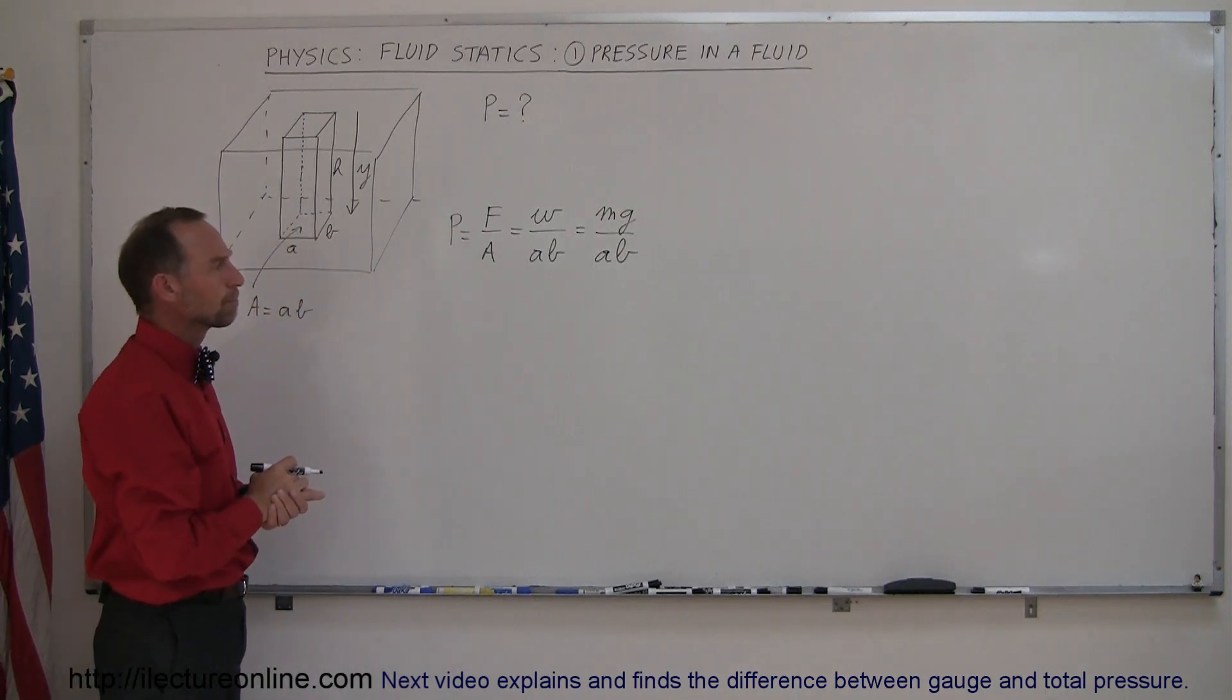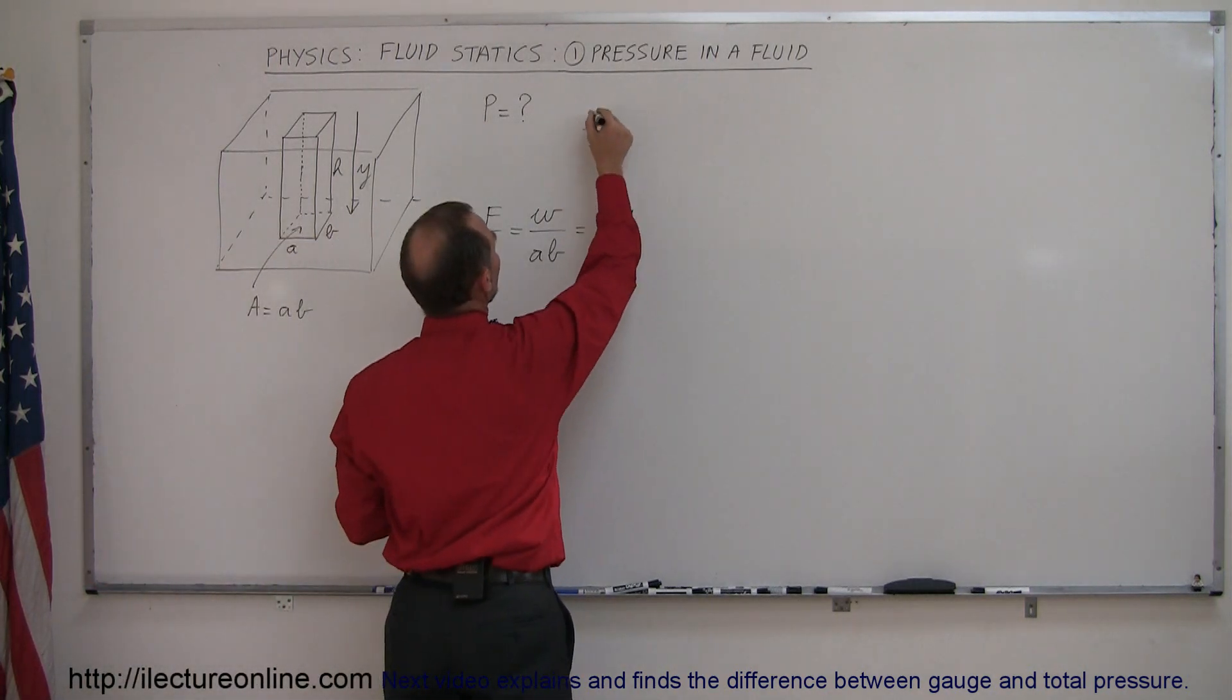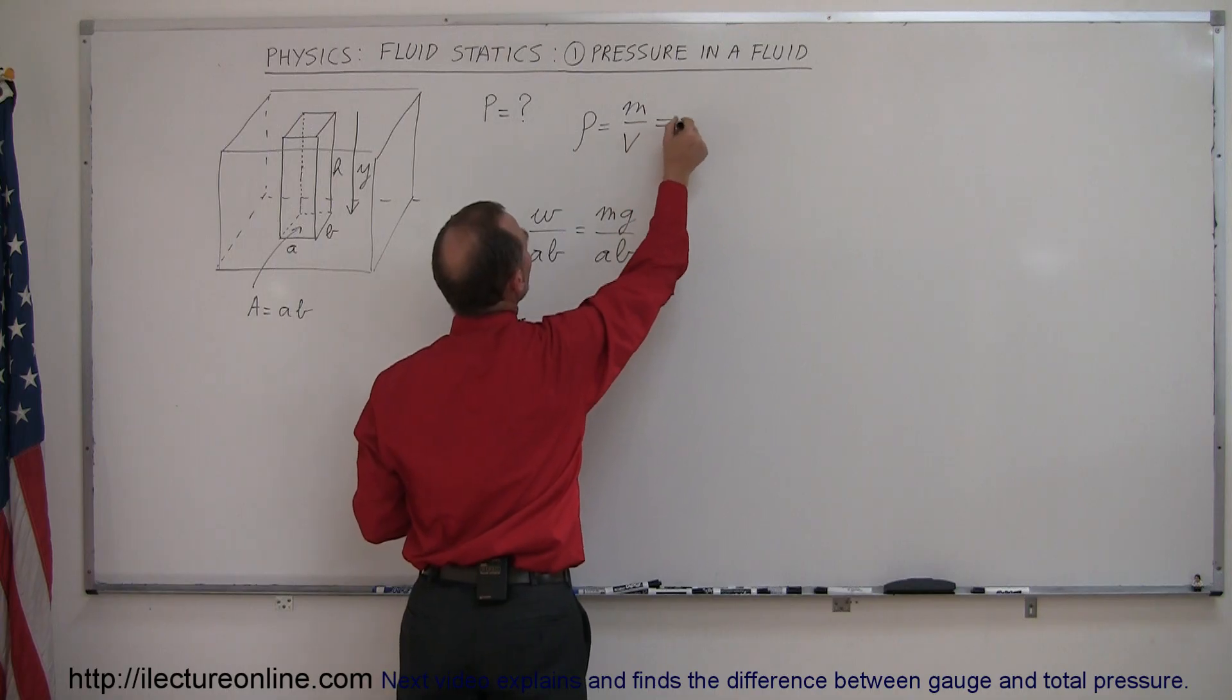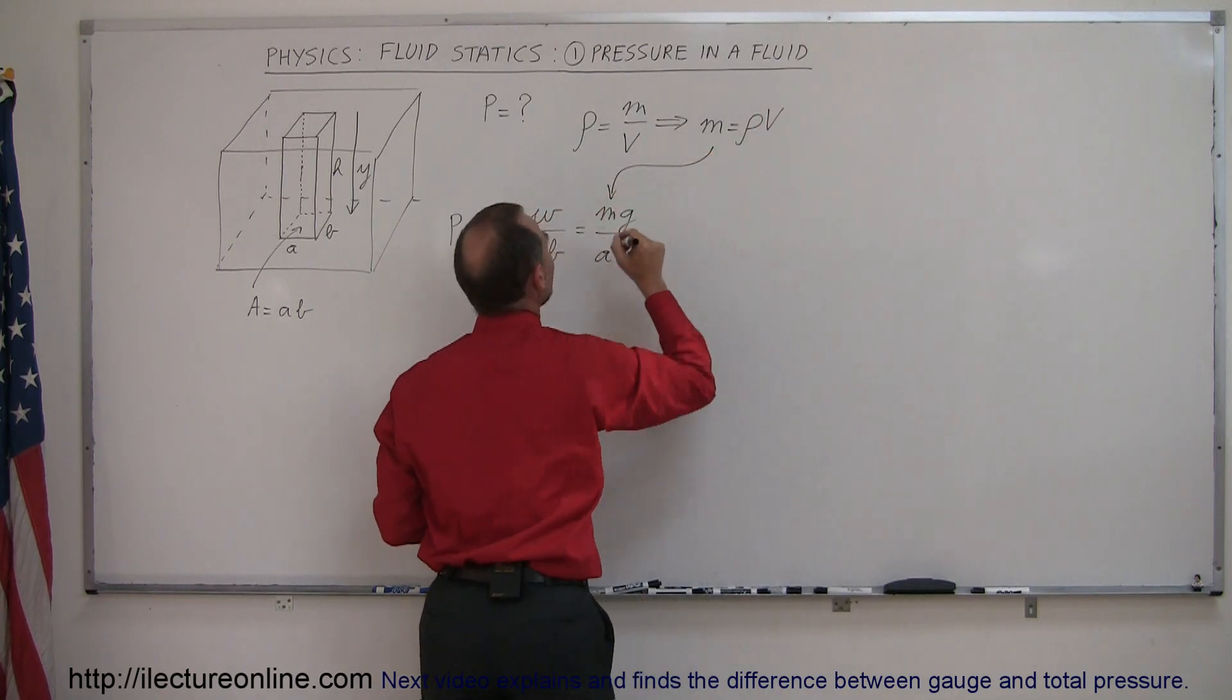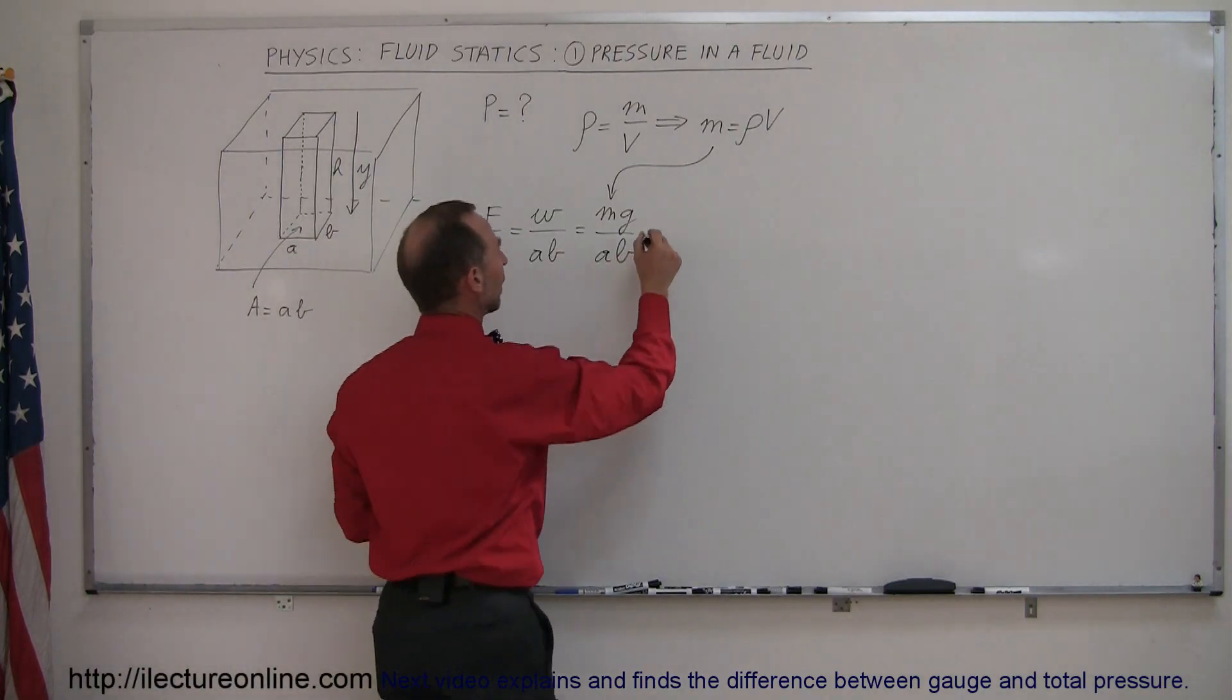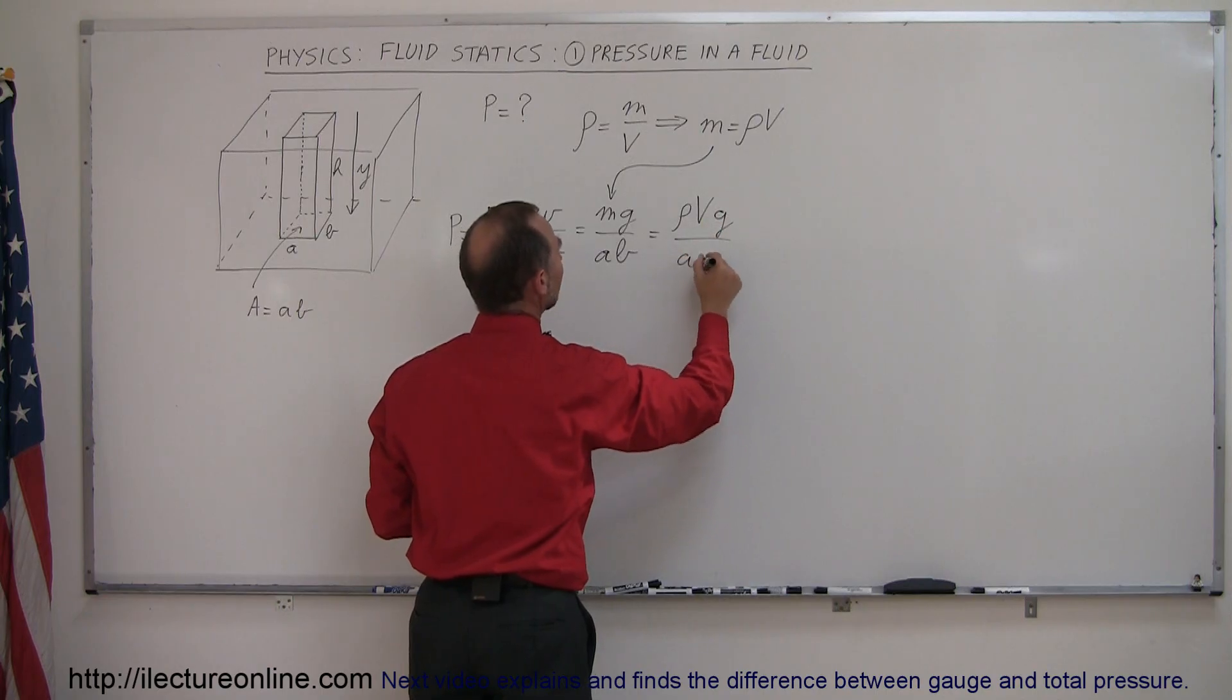Now, in fluids we have a relationship between the mass and the density. And that relationship is that the density of any fluid is equal to the mass divided by the volume, which means that we can solve this equation for mass and write that the mass is equal to the density times the volume, and substitute that in here for our equation for the pressure. So that means that now the pressure can be written as the density of the fluid times the volume times G divided by A times B.